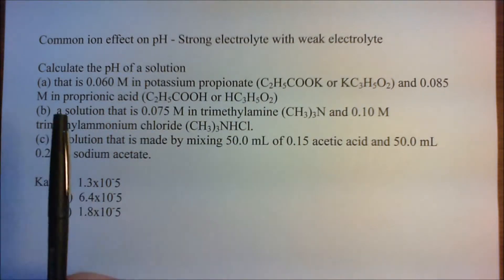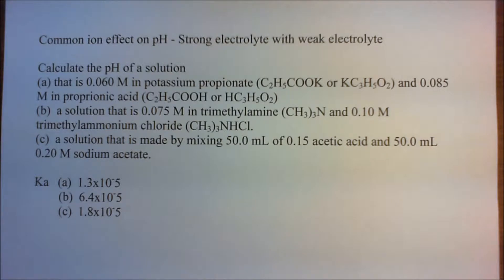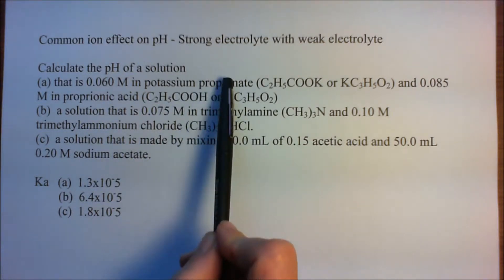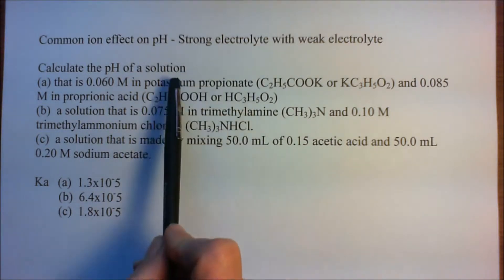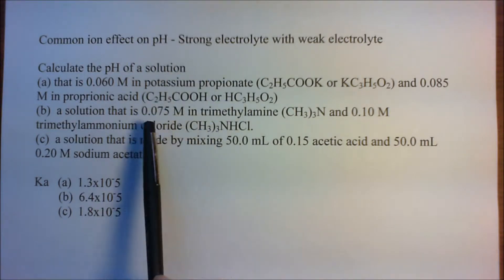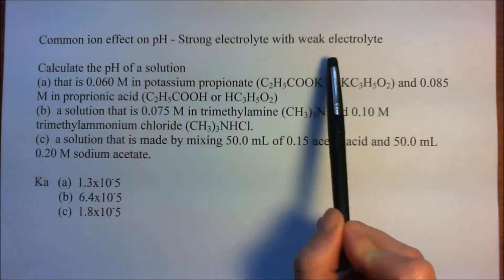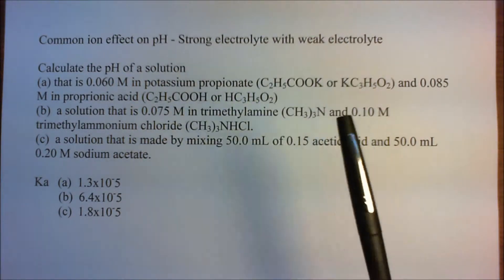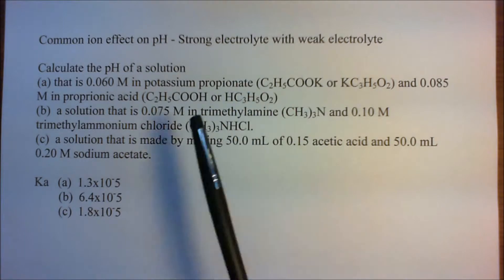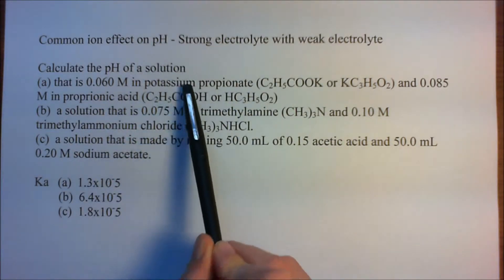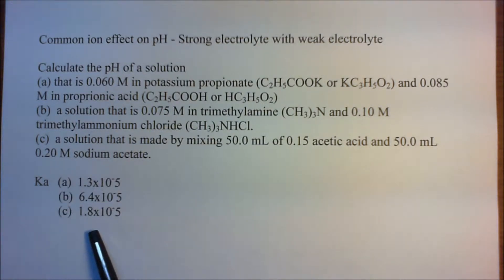We have three examples here, and we're going to calculate the pH of all three. To solve these problems with a weak electrolyte, you've got to have the Ka or the Kb. We have the Ka's and Kb's for the different situations for A, B, and C. This is something that you would either look up or it would be given to you in the problem.